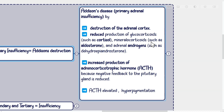Addison's disease, or primary adrenal insufficiency, is caused by destruction of the adrenal cortex. This causes reduced production of glucocorticoids such as cortisol, mineralocorticoids such as aldosterone, and adrenal androgens such as dehydroepiandrosterone. The absence of cortisol leads to increased production of adrenocorticotrophic hormone because negative feedback to the pituitary gland is reduced. In Addison's disease, ACTH is elevated and there is hyperpigmentation.